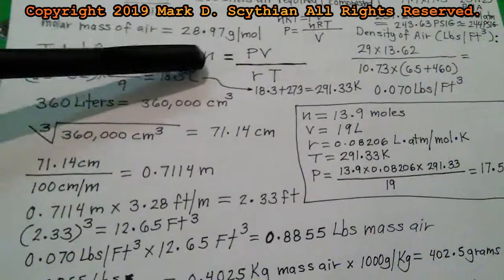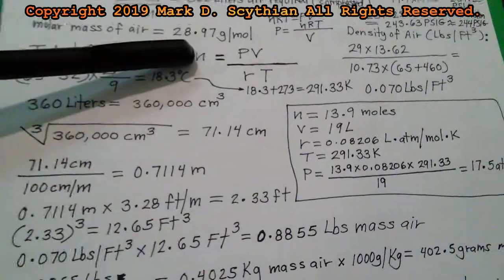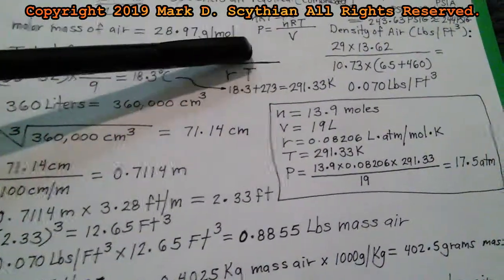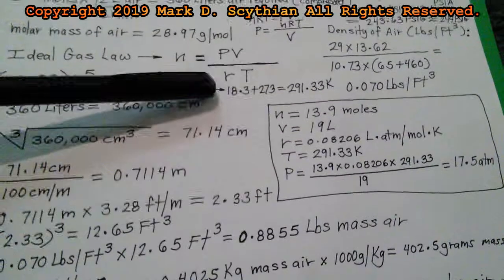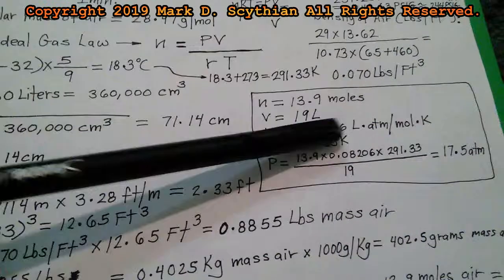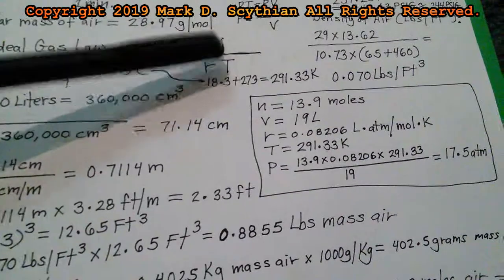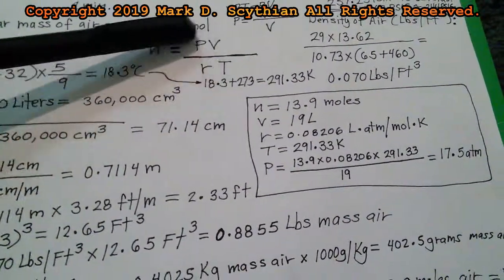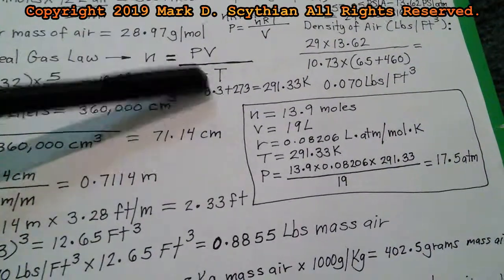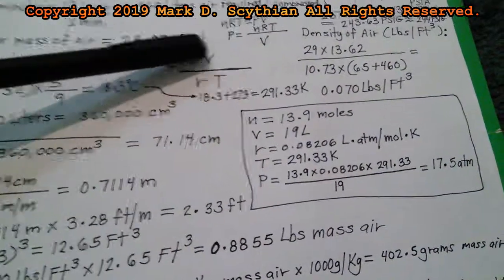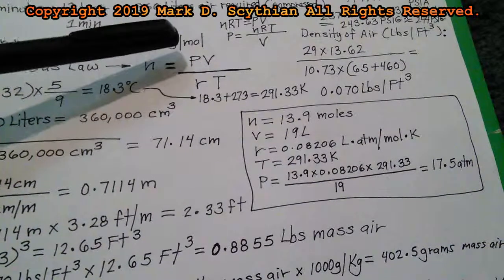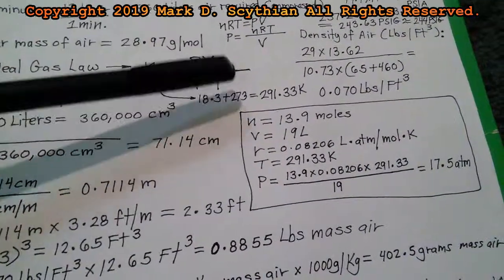We got the N for moles of a gas is equal to the absolute pressure in ATMs times the volume of the fixed closed tank volume, divided into the R constant for ideal gas law, multiplied times the absolute temperature in Kelvin. We have to solve for the P, the pressure. NRT is equal to PV. We isolate the P out of that, and we're left with NRT divided into V.